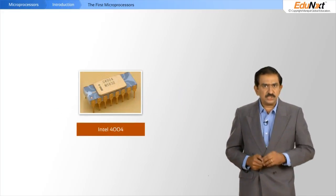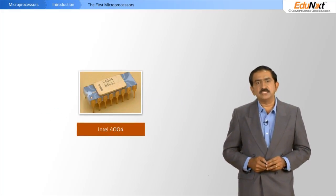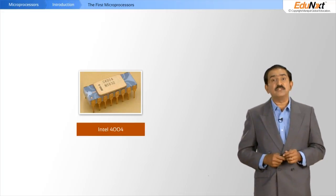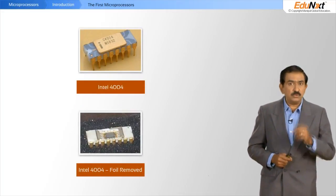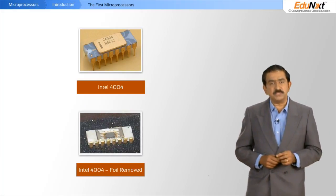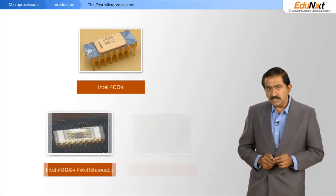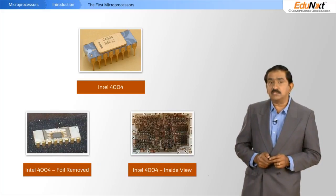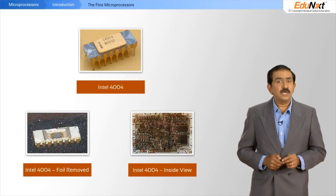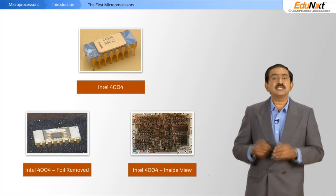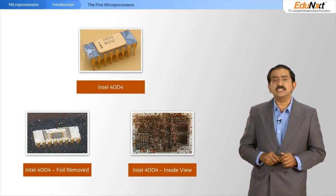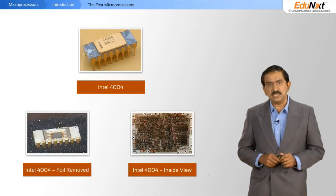The picture that you see on the screen here is an actual image of the 4004. If you remove the golden foil, what you see is the picture at the bottom. And if you were to remove the heat sinks and look at it through a microscope, you would see the architecture of the 4004 with all its connecting wires as depicted in this picture.